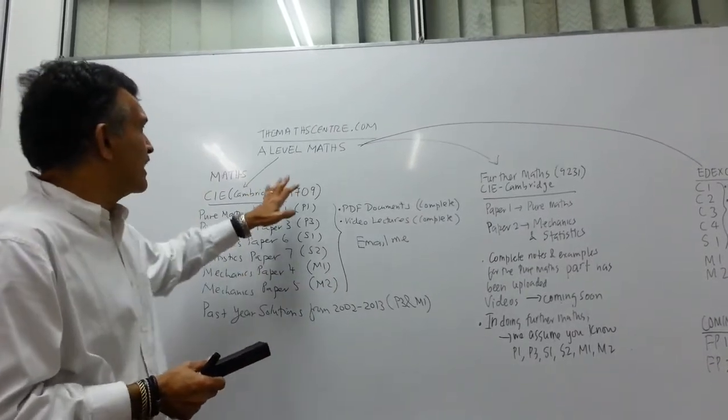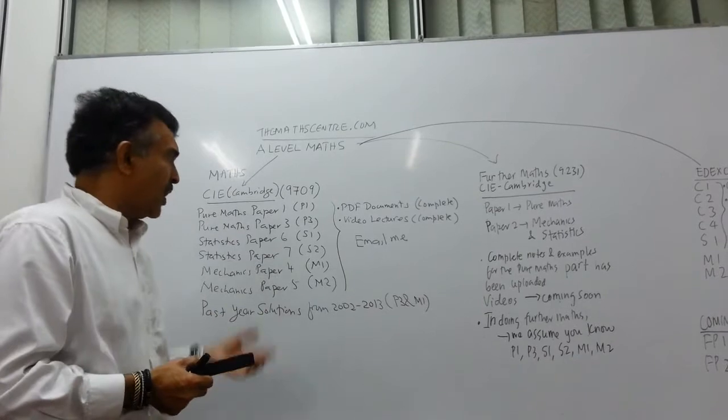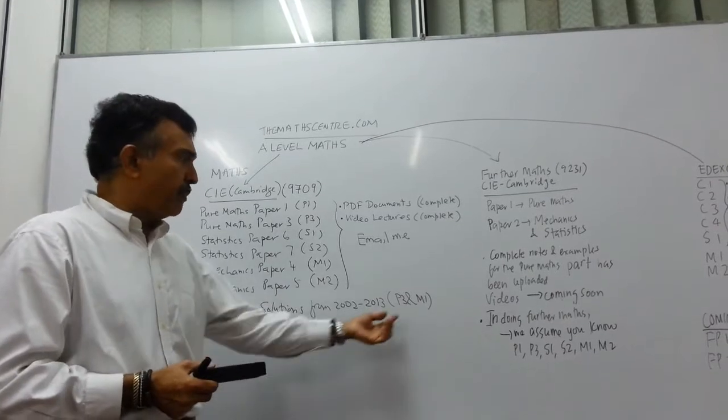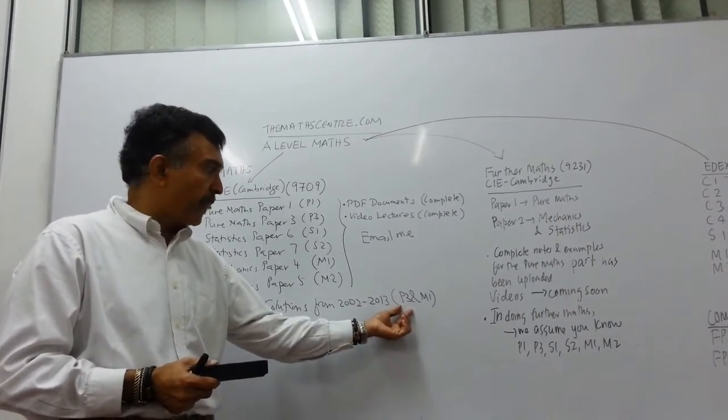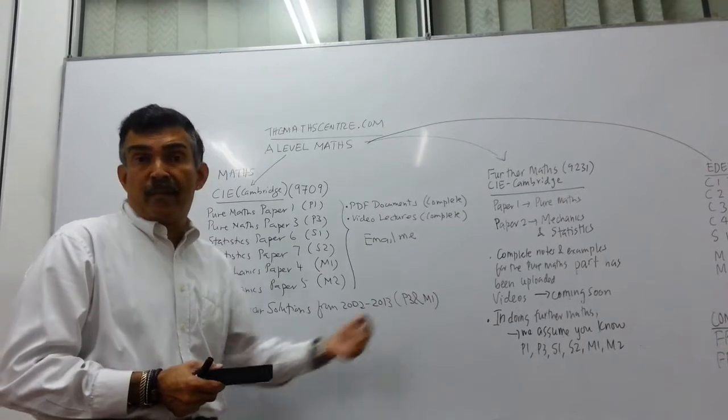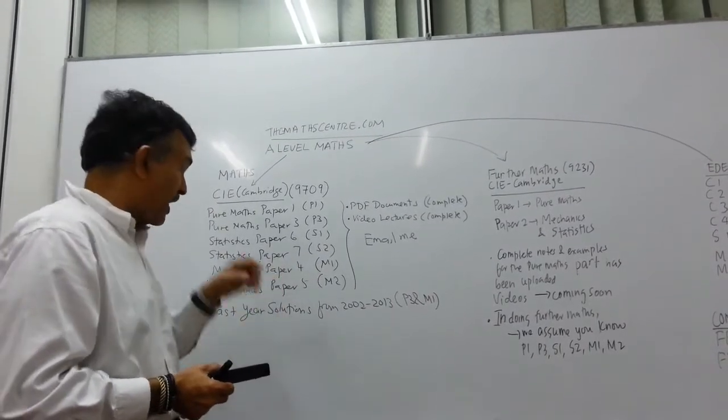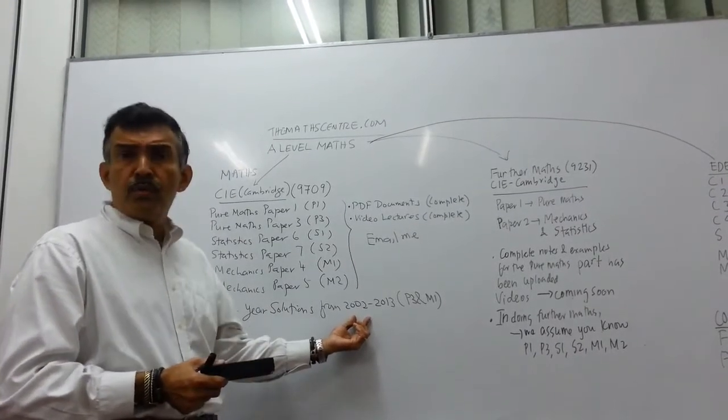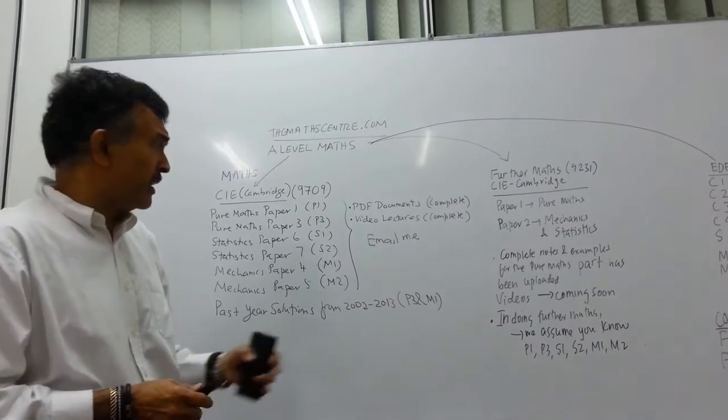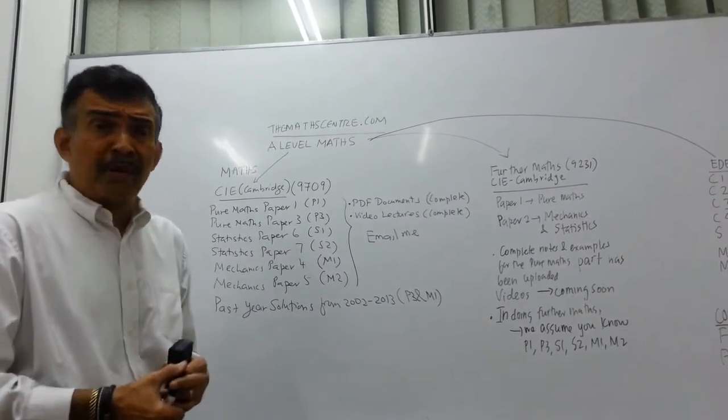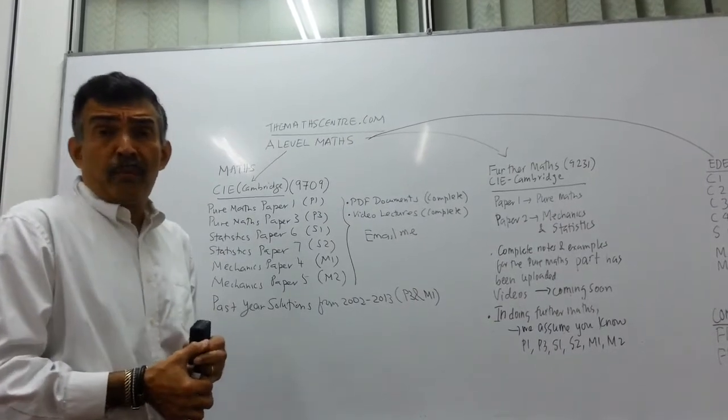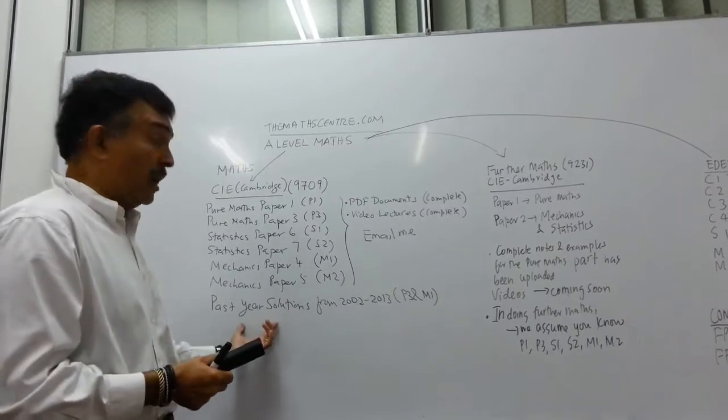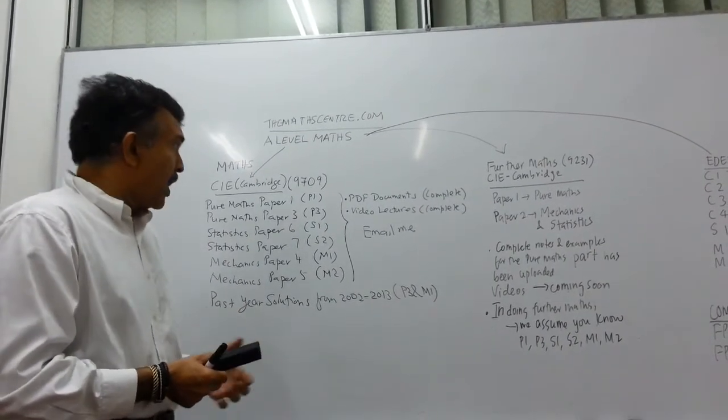What else do I have on 9709? On our website, we also have past year solutions for P3, the Pure Maths Paper 3 and the Mechanics M1, which is Paper 4. So I have worked out solutions to all the questions from 2002 to 2013. And I find that it is extremely helpful. A lot of people have found my solutions quite helpful, especially when they're revising for tests, for quizzes, for exams and so on. So you may want to get access to this as well.